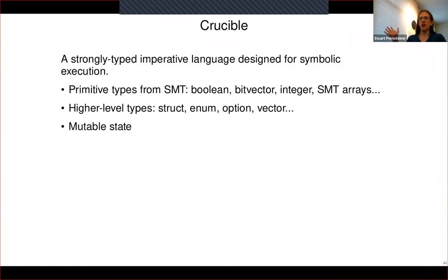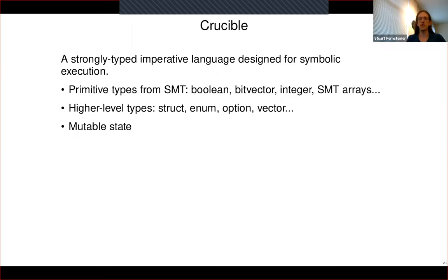Crucible is a strongly typed imperative language designed for symbolic execution. It has normal imperative control flow constructs, but the primitive types are the types you'd see in SMT: Booleans, bit vectors, unbounded integers, SMT arrays, and so on. It has mechanisms for composing these into higher-level types, which is convenient for tools like CruxMirror that map a high-level language down onto this. It also has support for mutable state — local variables that you can read and write, just like any other imperative language.